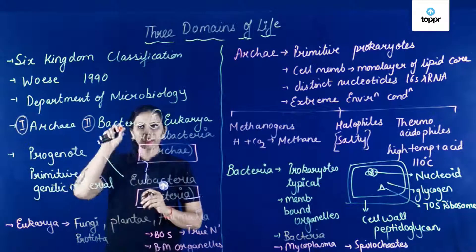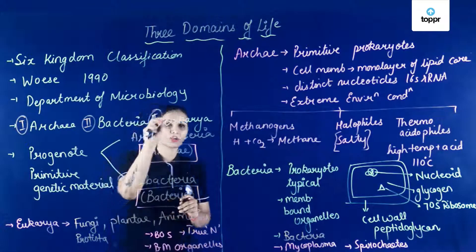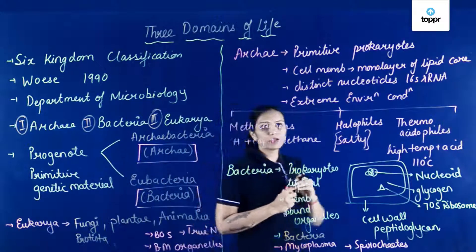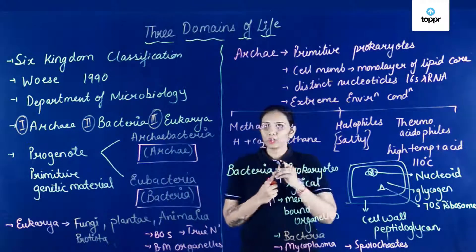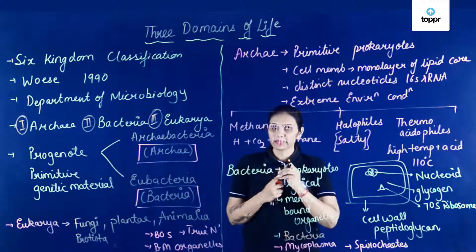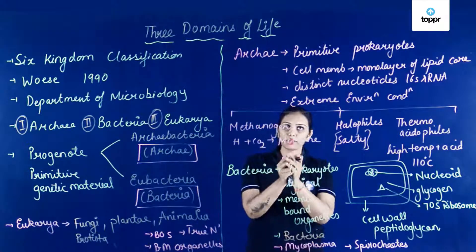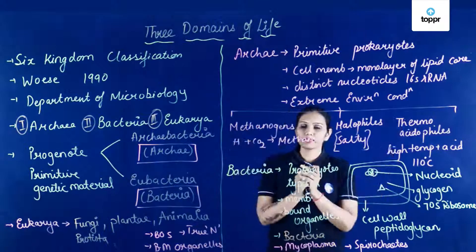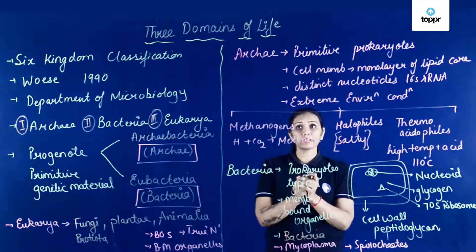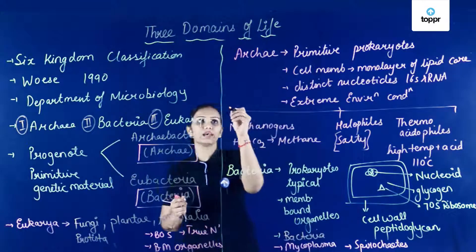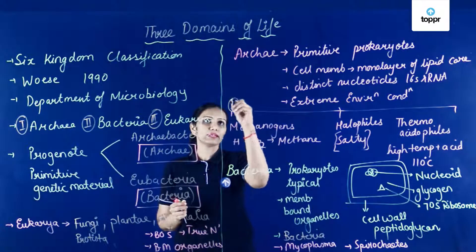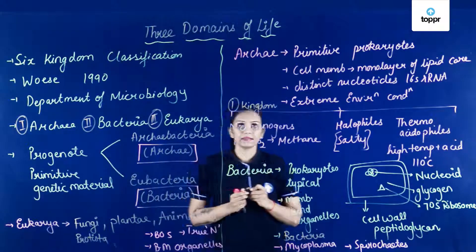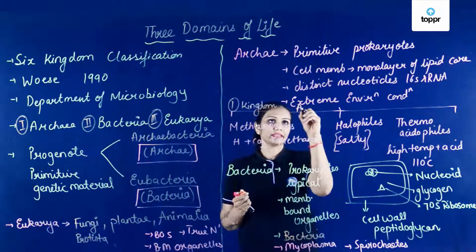Archaea includes primitive prokaryotes, Bacteria includes typical prokaryotes, and Eukarya includes eukaryotes. When we look into the Archaea — primitive prokaryote hai. Iski cell membrane ke core mein kya hoga? Monolayer of lipid. Aur distinct nucleotides hai in the 16S RNA. Ye extreme environmental conditions mein grow karte hai. And it includes only one kingdom — that one kingdom is Archaebacteria.